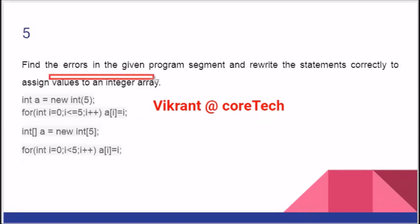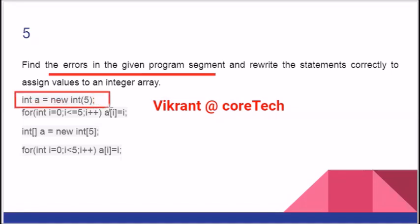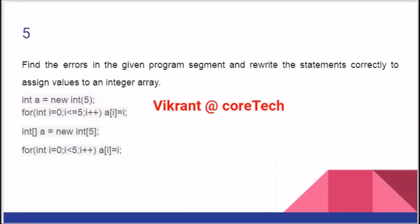We might not have a direct question like 'find errors', but we may be asked to find the statement where there is an error. So here an array is created, but we should have something like this. Square bracket 0 is okay, but how can it be equal to 5? We have to avoid the equal to sign, because if there are 5 elements, the index will go from 0 to 4.